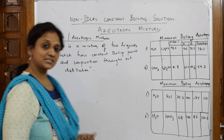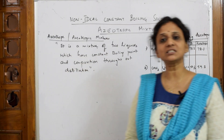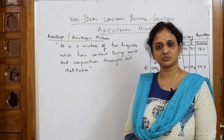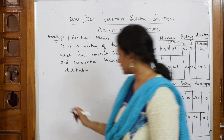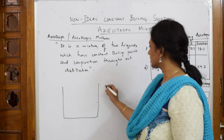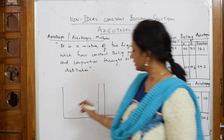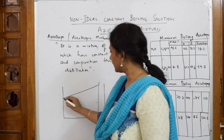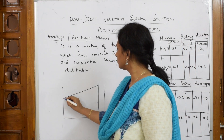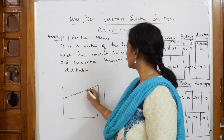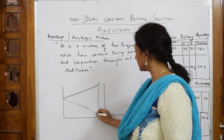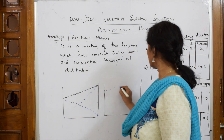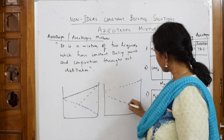In non-ideal solutions we studied two types of deviation — positive and negative. Let us draw the graphs first. This is one graph for positive deviation and one more graph for negative deviation. This is your ideal solution graph shown as a dotted line so I can differentiate.